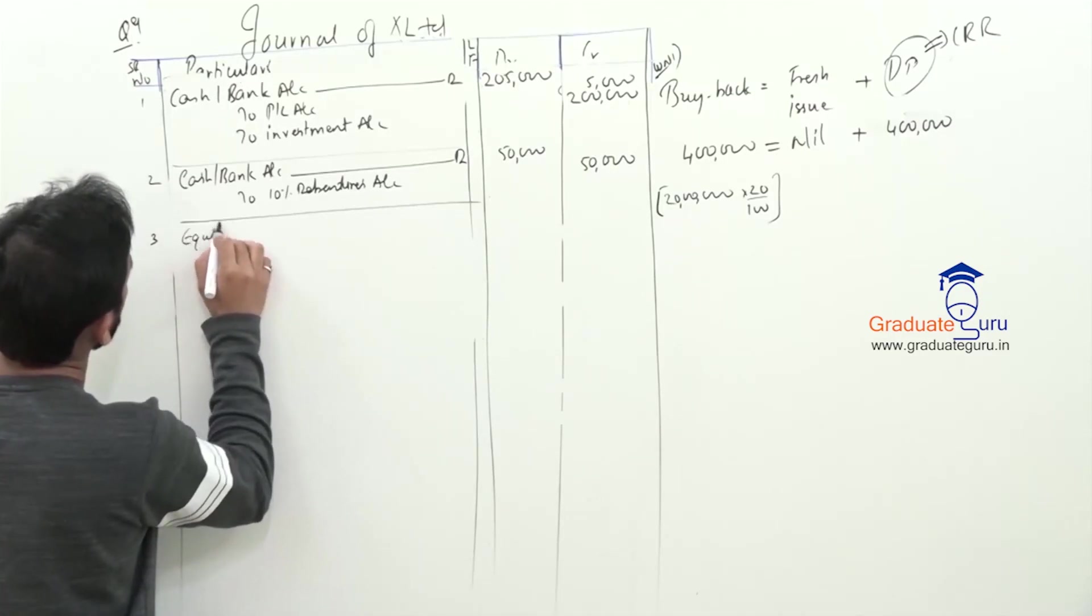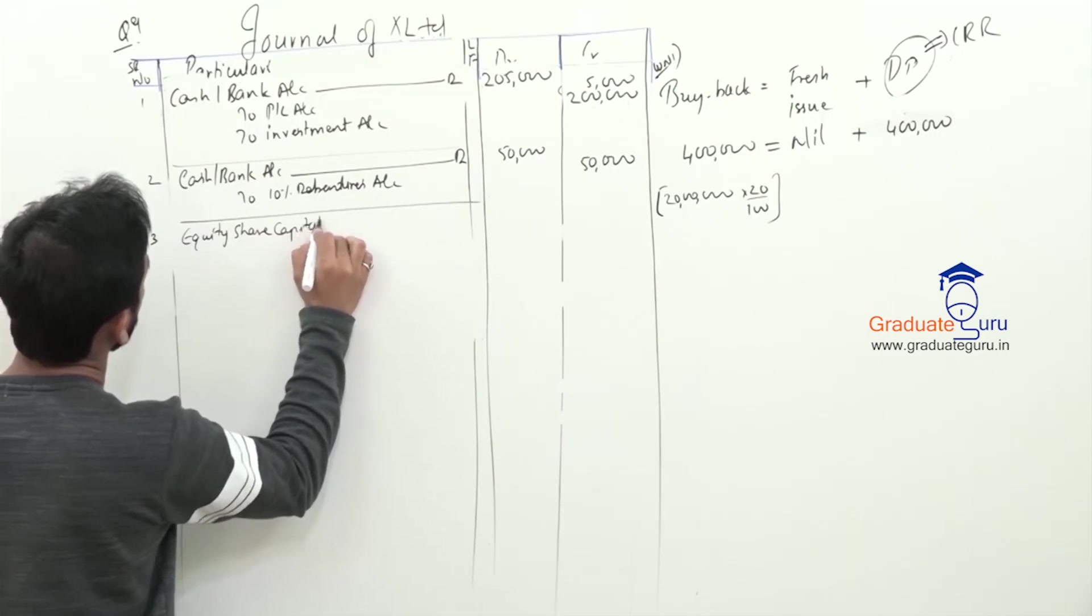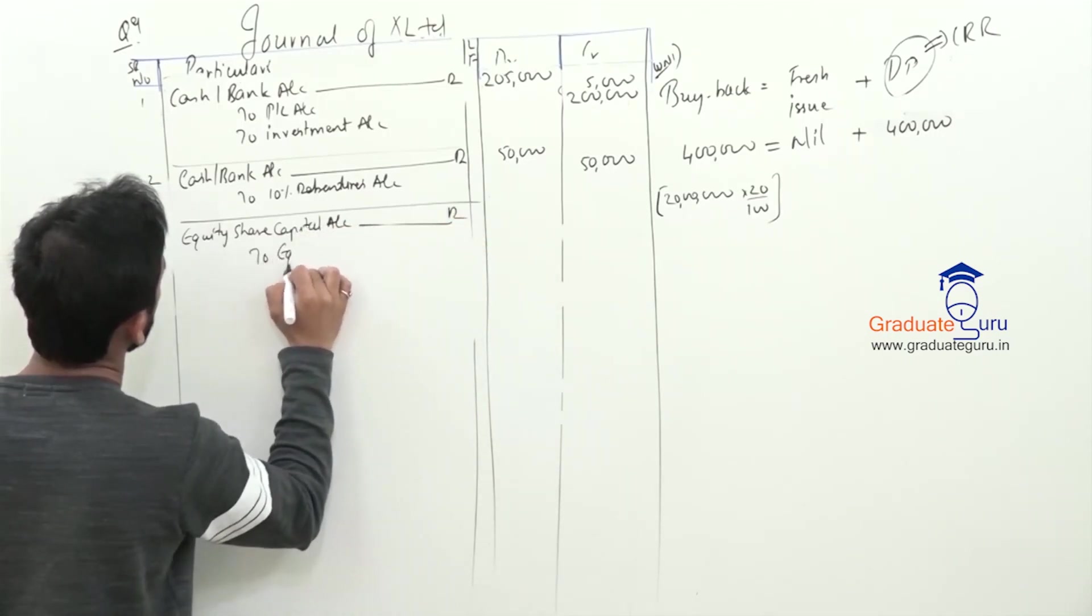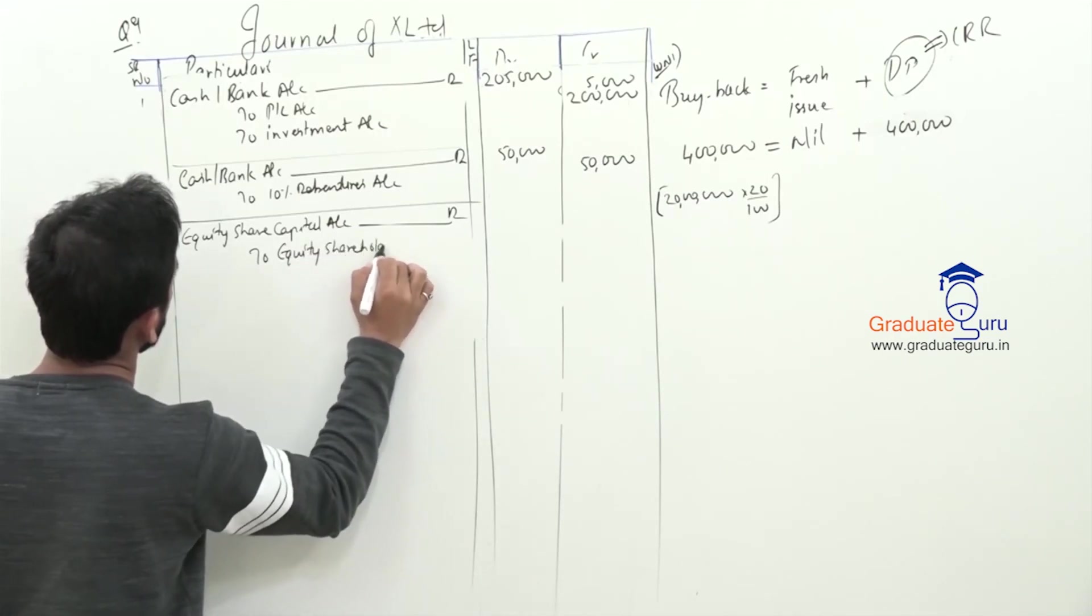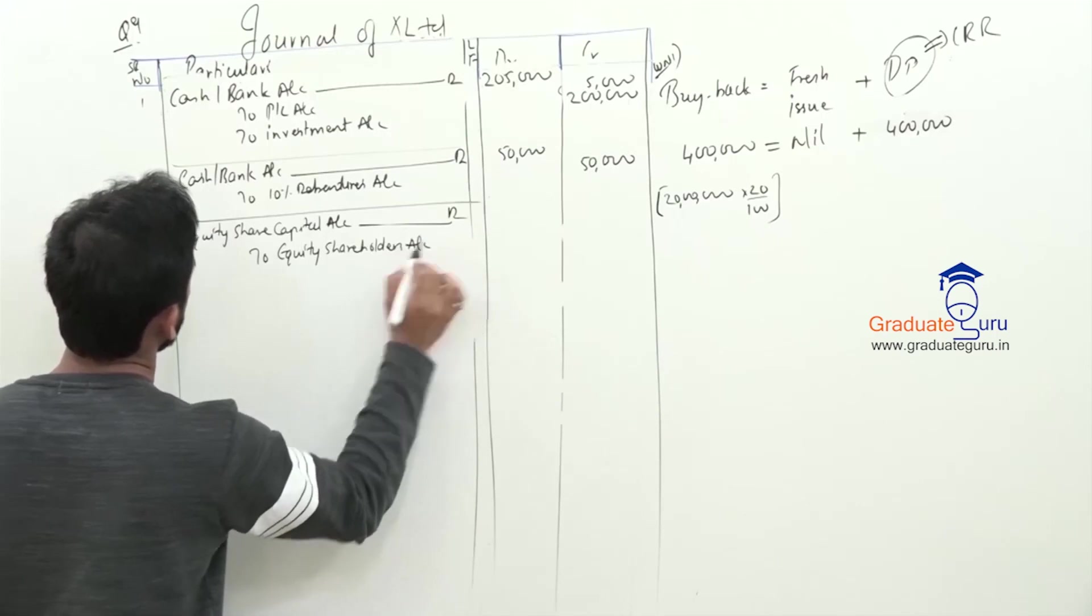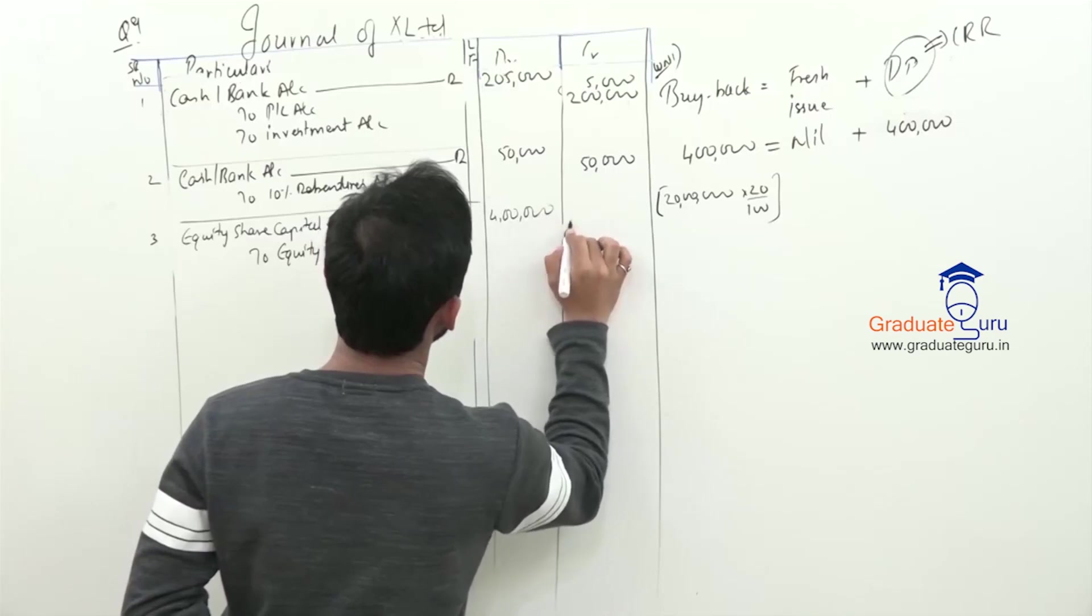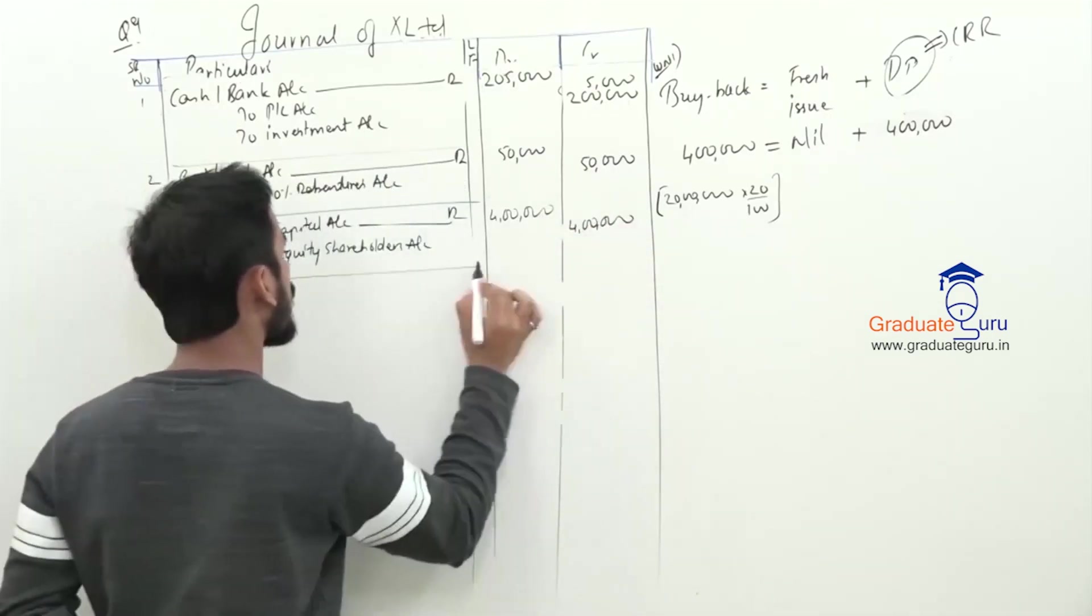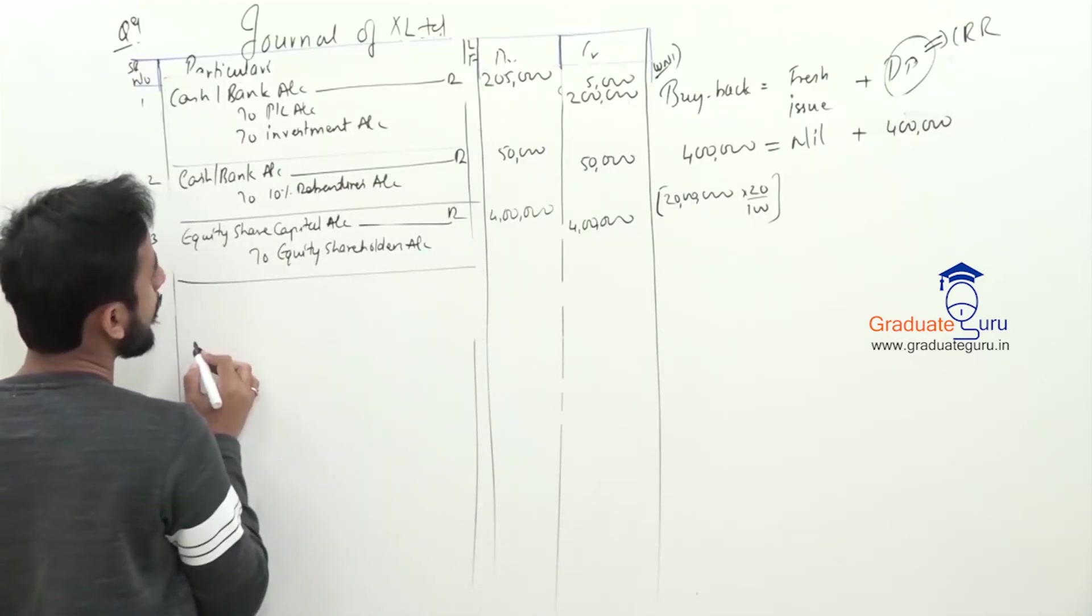So, equity. How? 4,00,00,000. That's it.